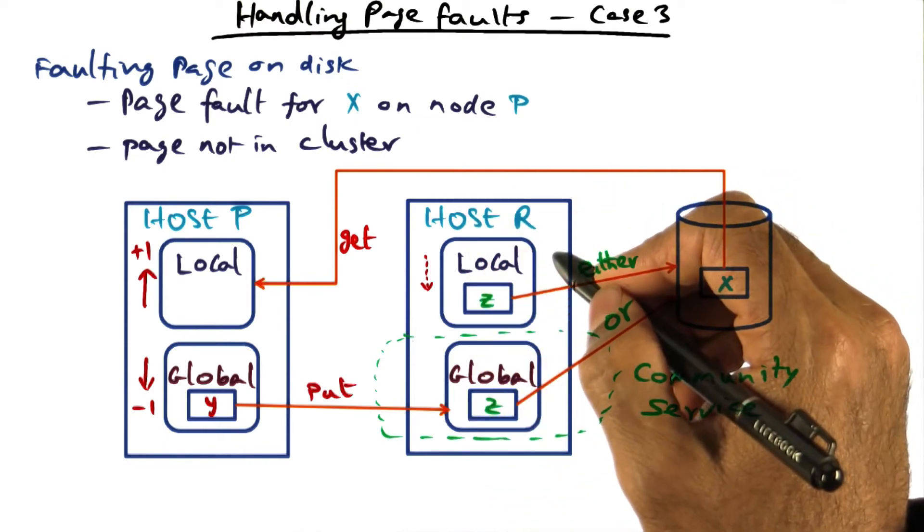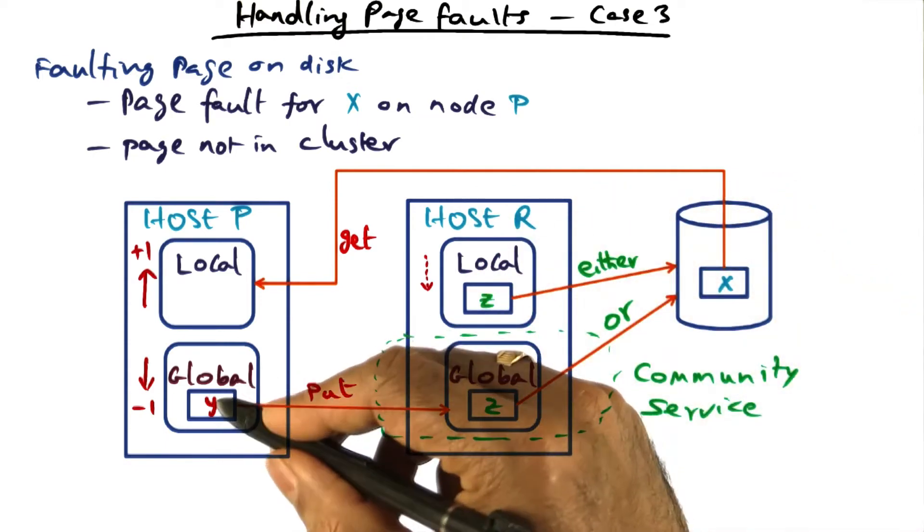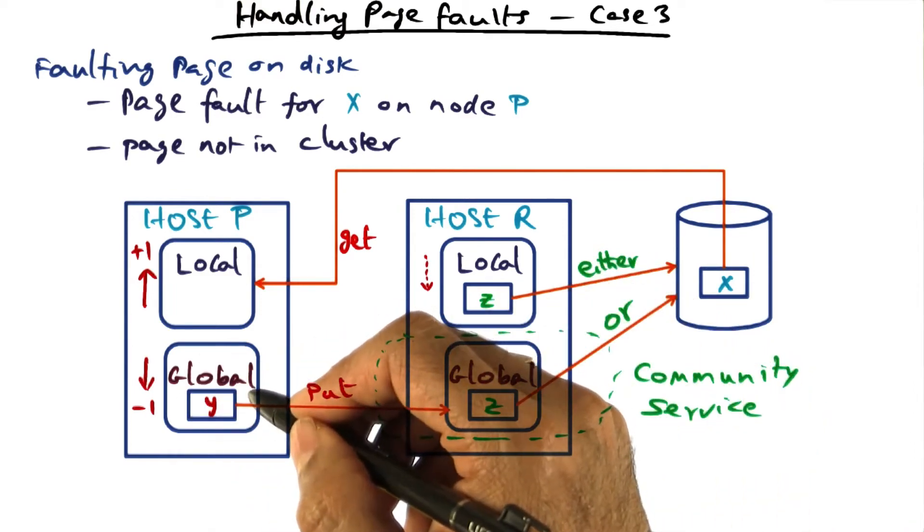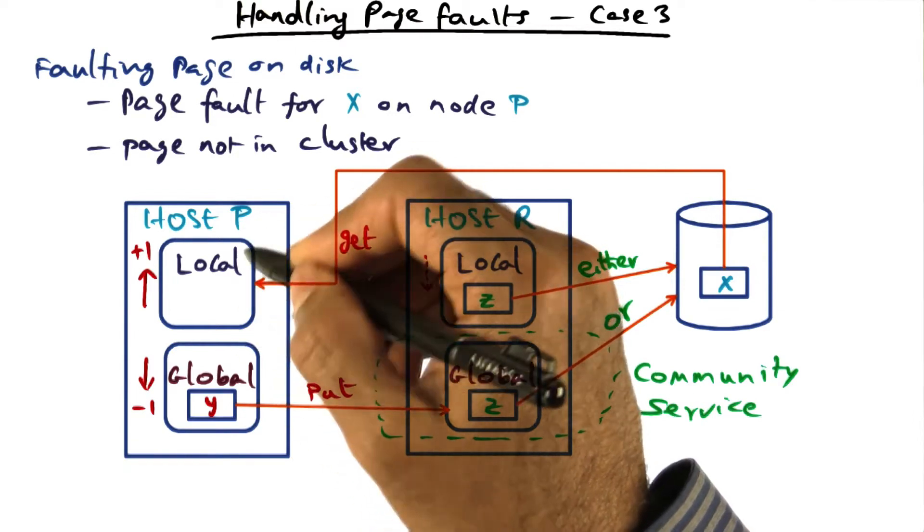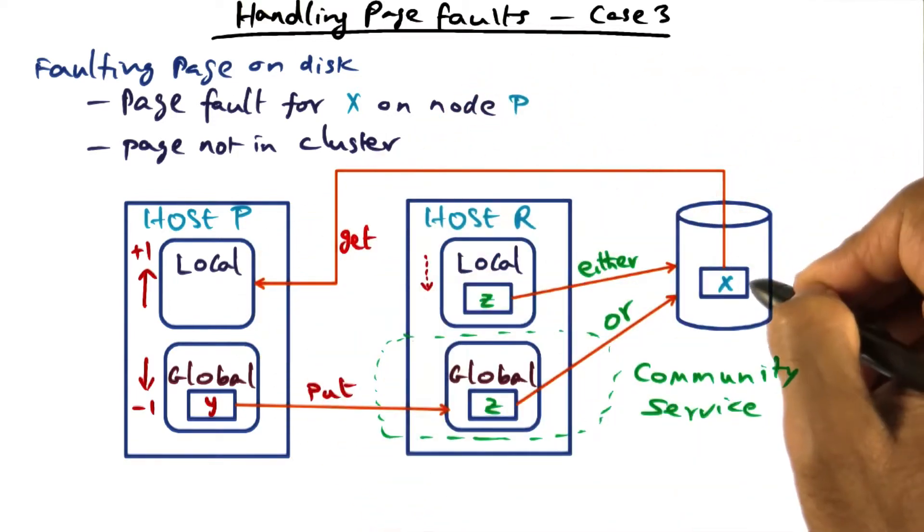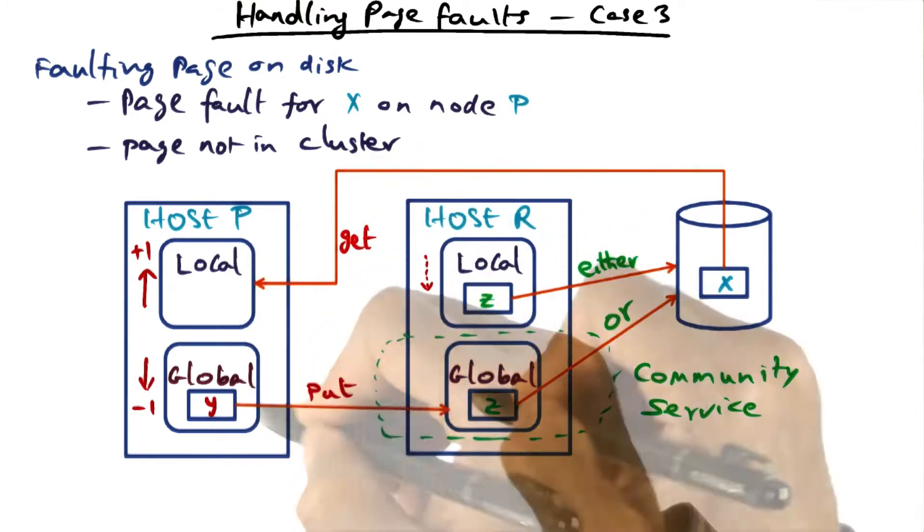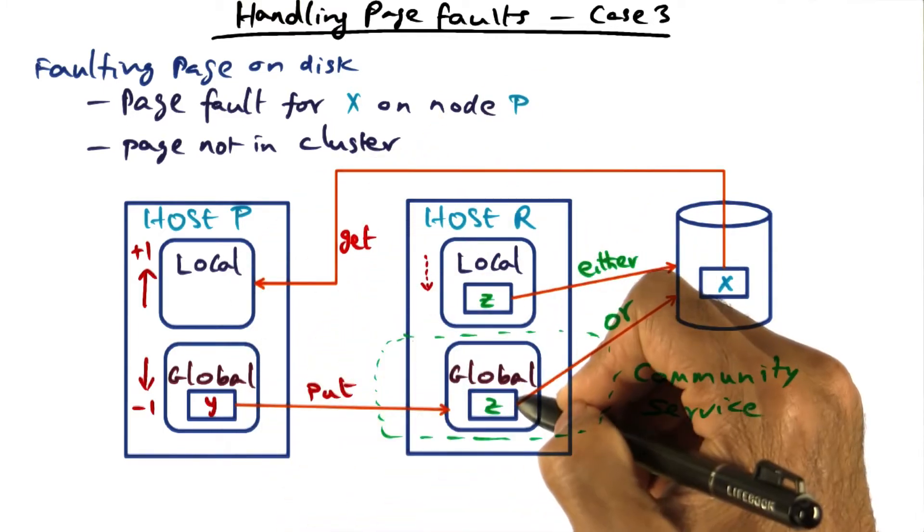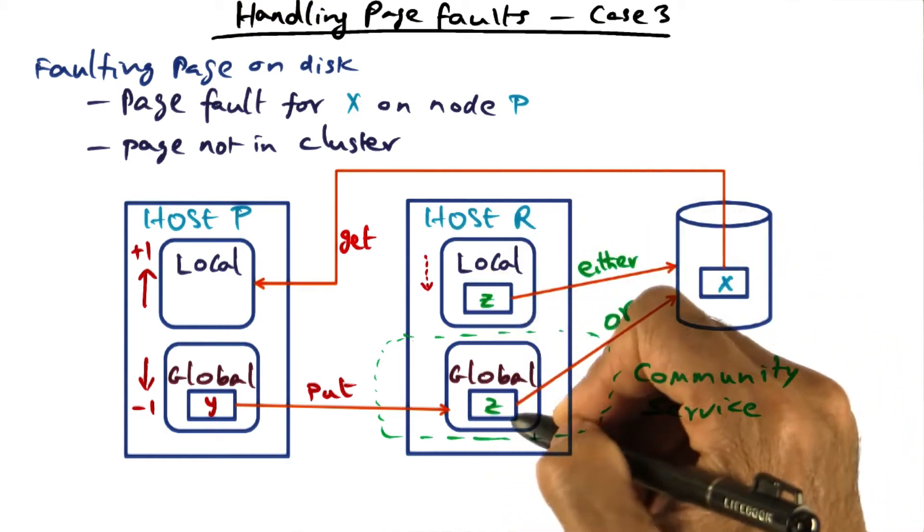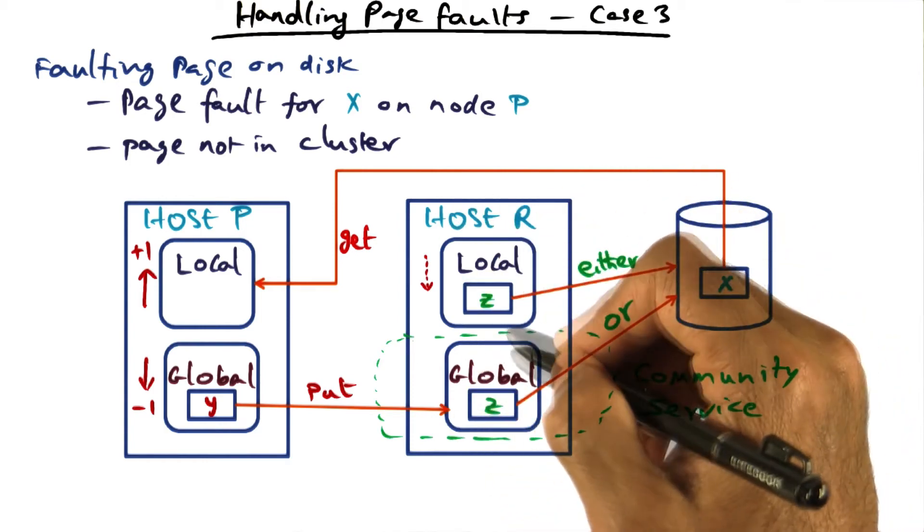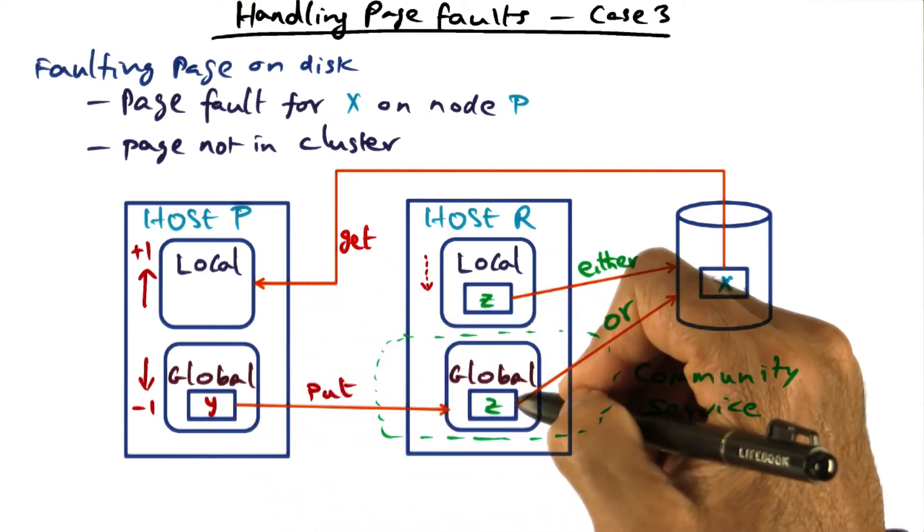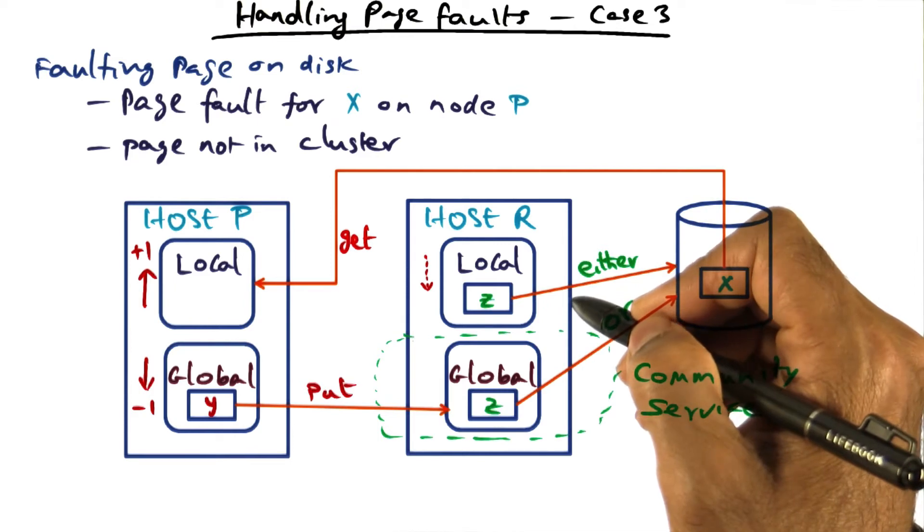So what we're going to do is, we're going to tell that guy, hey, I'm going to give you a page to hold. Because this used to be in my global part, I don't have room anymore, because my local is increasing by one because of this page fault and adding x to my working set now. So please hold on to this page that I'm going to give you in your global cache. Now this guy has a split like this. So if it has to make room for the new page that is coming in from its peer, clearly it has to get rid of something.